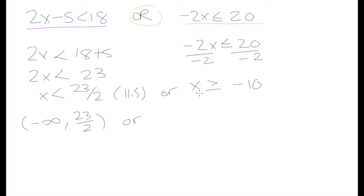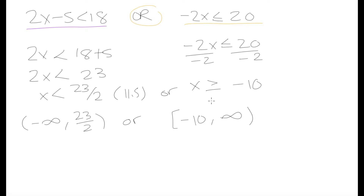We have our other condition which is that x is greater than or equal to negative 10. So in this case we're going to have negative 10 as our lower bound with a square bracket — a closed bracket — because negative 10 is included as a possible value for x. Our upper bound is going to be positive infinity, representing all values that are negative 10 or greater. Let's put both of these conditions onto a number line.